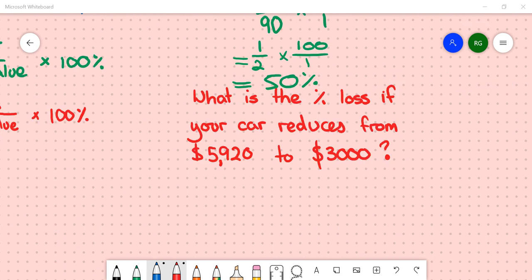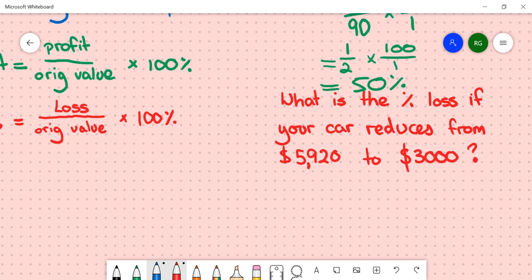For this next example in red, what is the percentage loss if your car reduces from $5,920 to $3,000? Again, the key here is to work out what the loss is. So we need to go $5,920 minus $3,000. That will give us $2,920.